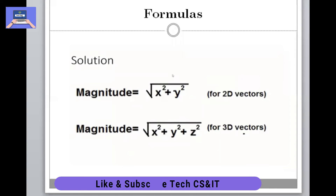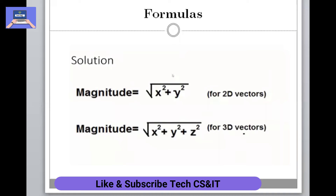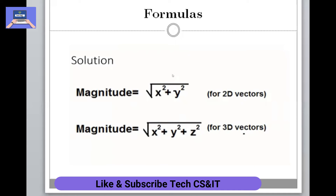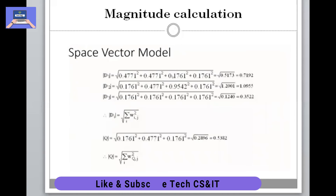These are the two formulas for magnitudes for 2D and 3D vectors. It depends on the dimensions of the vector: if it is a two-dimensional vector, it considers only x and y values; if it has more dimensions — three, four, and so on — the formula extends accordingly with x, y, z, etc. This is the formula for the magnitude.